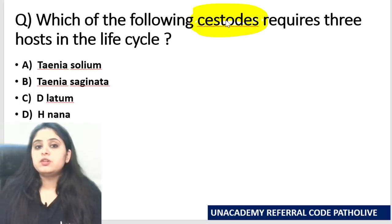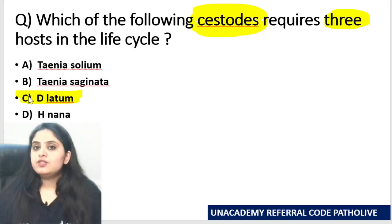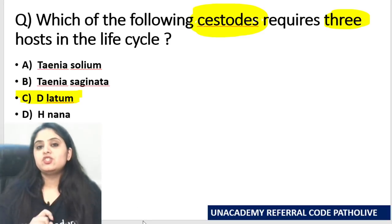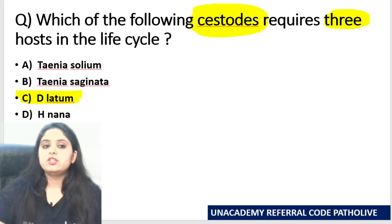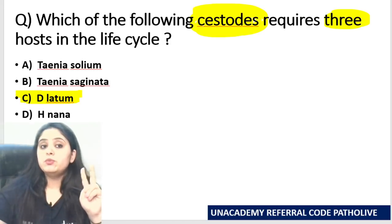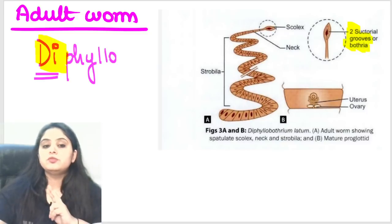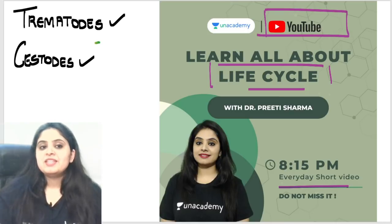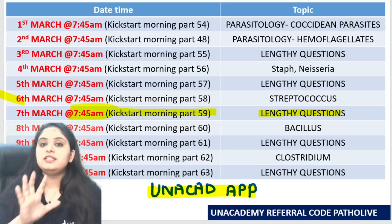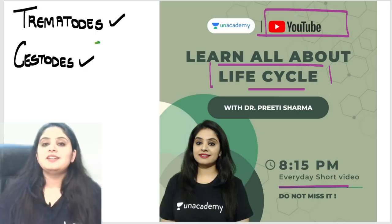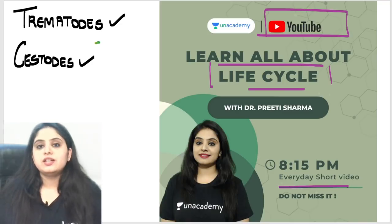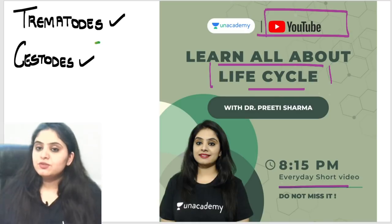As a teaser for tomorrow: which cestode needs only one host? That's H. nana — the smallest cestode, needing only one host. Remember: one host = H. nana, three hosts = D. latum. The 'di' in Diphyllobothrium stands for the two bothria or grooves on the anterior end. Tomorrow's sessions are at 7:45 AM for five lengthy MCQs, 4:30 PM for seven pedigree charts, and 8:15 PM for the H. nana life cycle. Hope you're benefiting from this series!